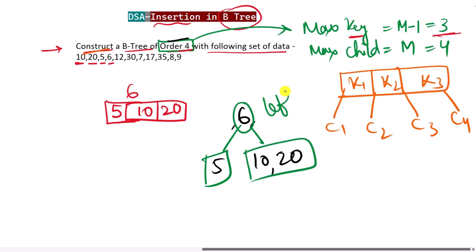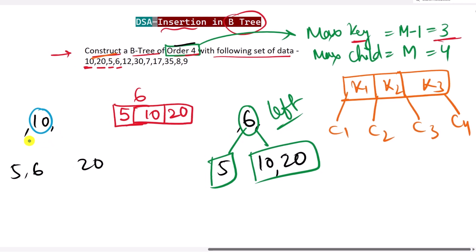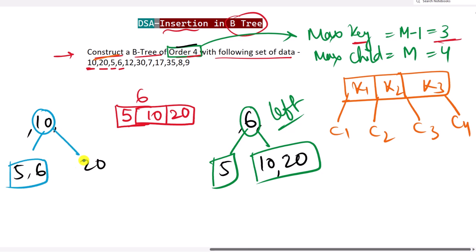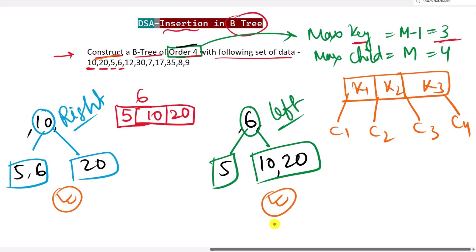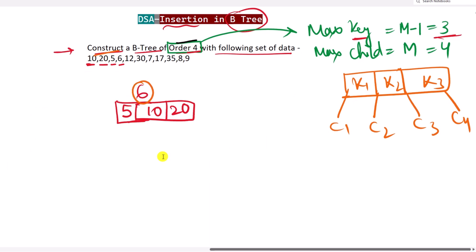Alternatively, with right-biasing we could pick 10 as the median, leaving 5 and 6 on the left and 20 on the right. In this video we choose left-biasing, so 6 becomes the root node, with 5 as the left child and 10 and 20 as the right child.